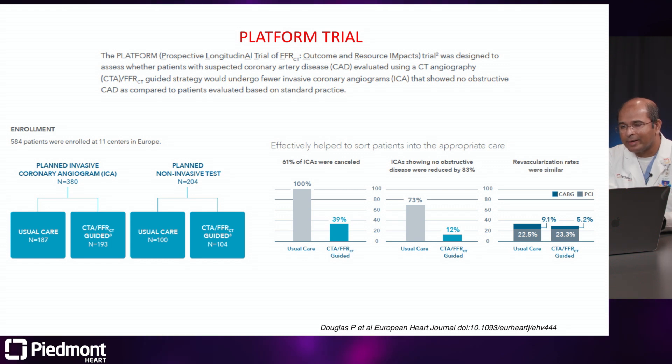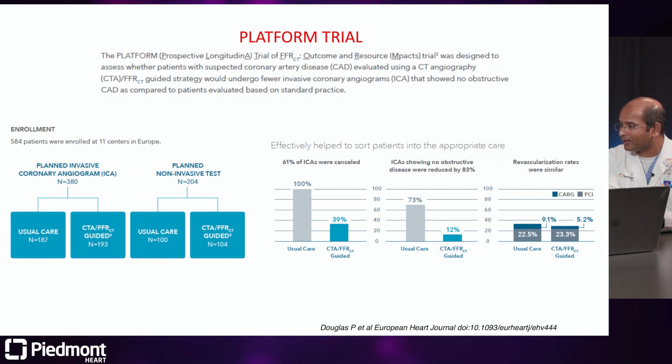Based on the PLATFORM trial, the number of diagnostic caths has come down using CT-FFR, but the caths actually done for invasive PCI were more frequent — improving the yield of who goes to the cath lab. This also helps in planning the cath based on the lesion and its location, and you already know the FFR value beforehand, which probably decreases the time taken in the cath lab. In some instances, if lesions are definitively not significant based on FFR, patients may not even need a cath afterwards.